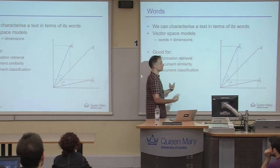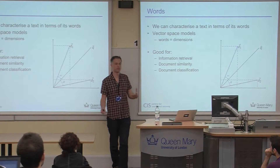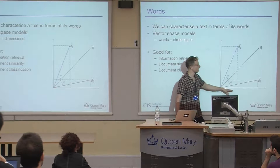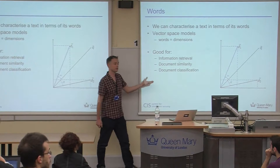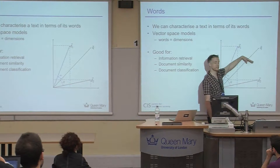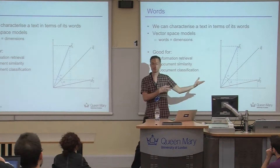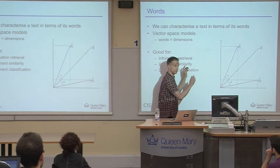We can do things like document similarity this way. It sounds really basic, but this is roughly how all information retrieval — all web search engines — still work at their core. We might apply different weightings to dimensions and do other clever things, but this is the basic insight. It can tell us how similar documents are, help us classify documents, run clustering algorithms, or run discriminative classification in this space — meaning you can apply unsupervised learning and supervised classification methods to language.